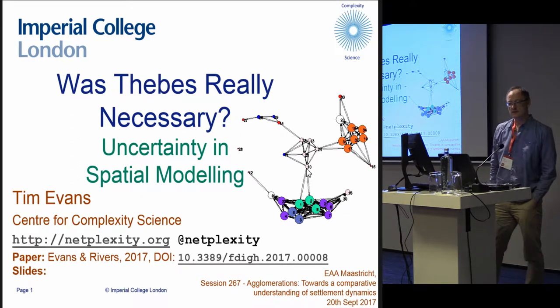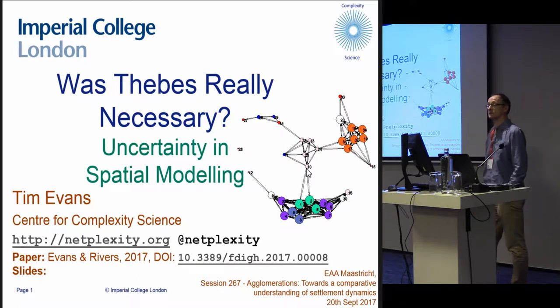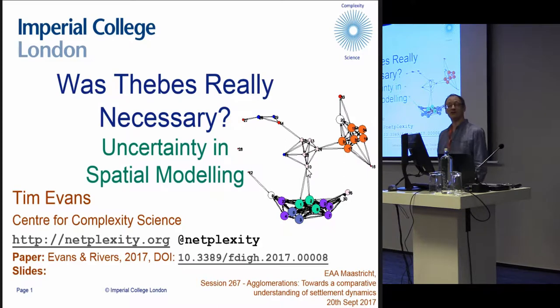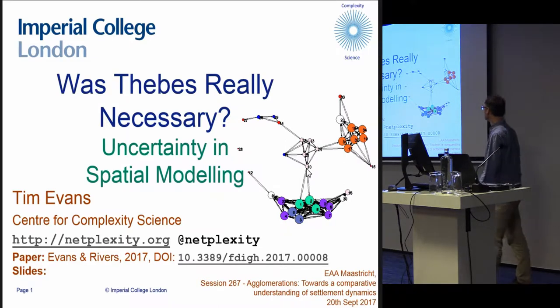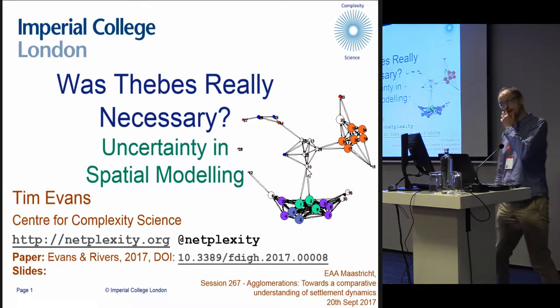This has come out of work that I did with Ray Rivers and Carl Knappett looking at the Aegean. Because of the work we did there, we got very interested in spatial models in general. Ray and I, not having access to the interesting archaeological data that many of you are talking about, went back to an old project. We had a look at whether, with a modern viewpoint in terms of uncertainty, we could revisit some work of Rihil and Wilson that's quite well known.